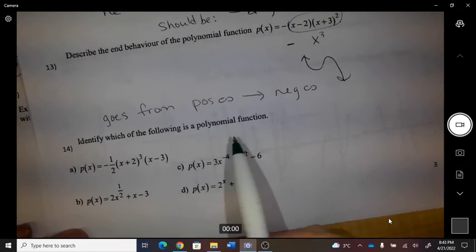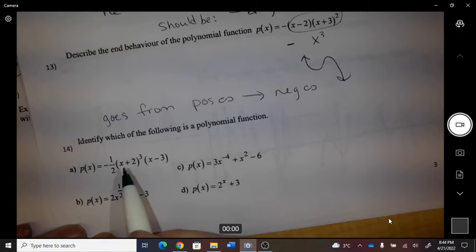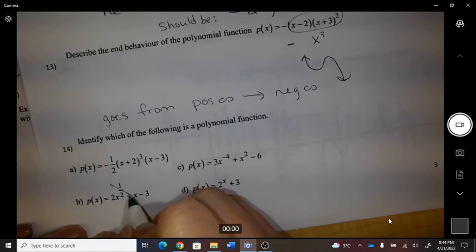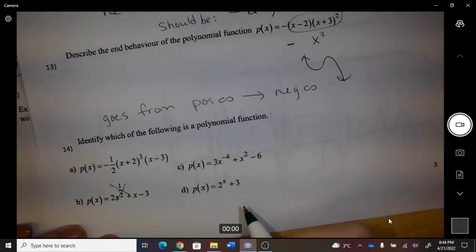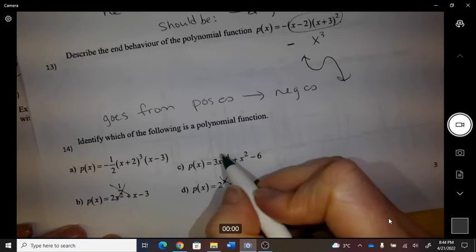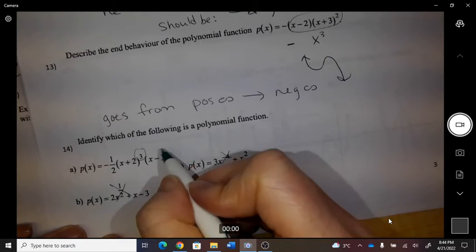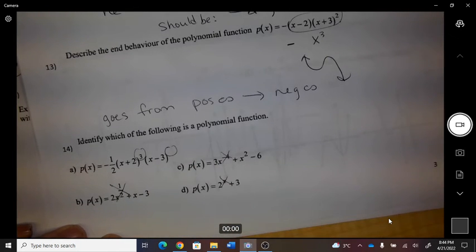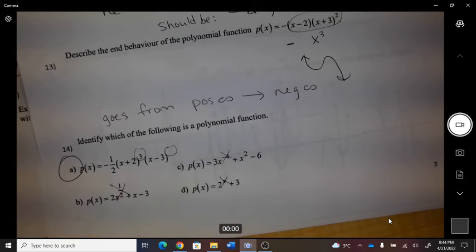Identify which is a polynomial. So this is not with the half, this is not, and this is not - they have to have whole number exponents, so it's A.